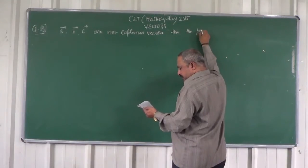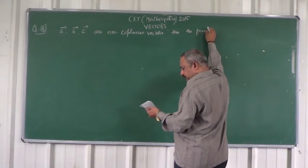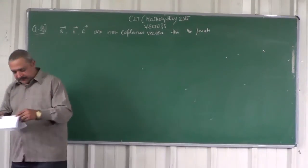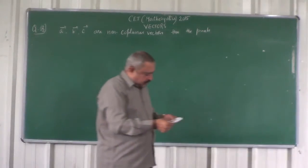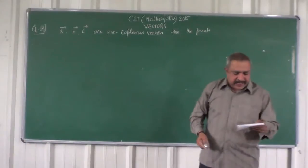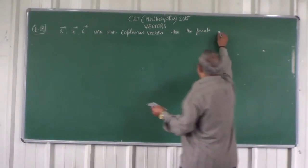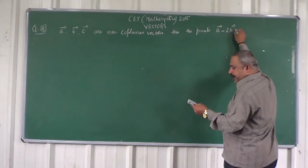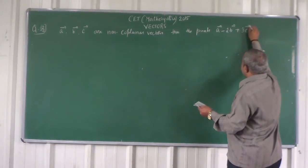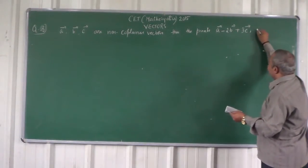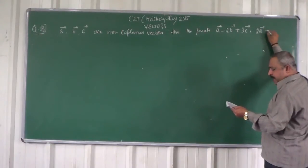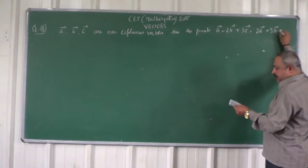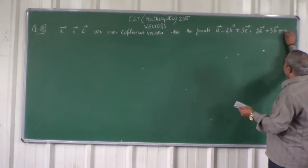Then the points: vector A minus 2B plus 3C, comma 2A plus 3B minus 4C,